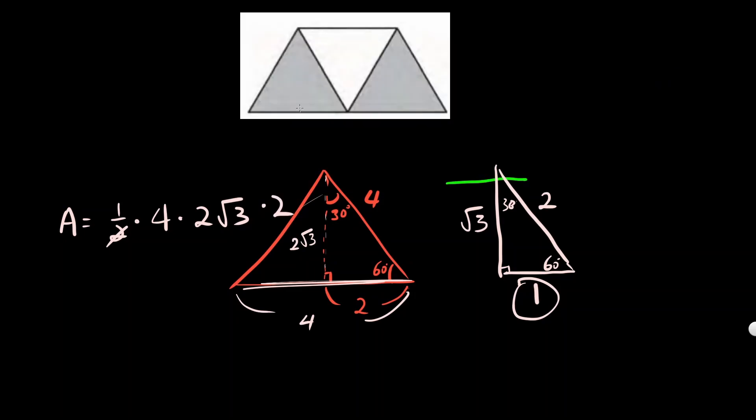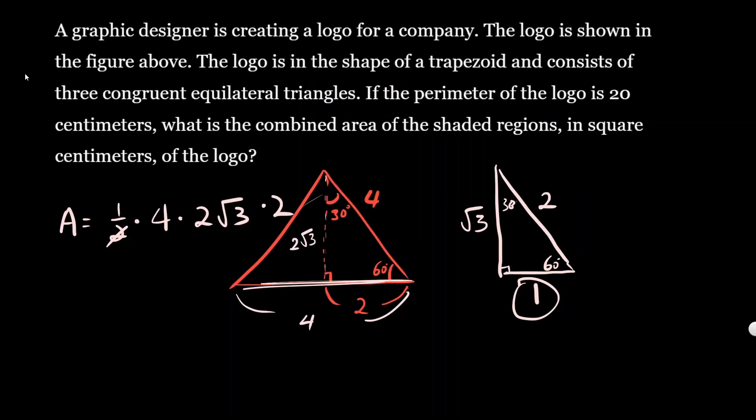So I'm going to multiply by two at the end. We have one-half times four times two square root of three times two because there are two triangles. Two cancels with two, so the area must be eight square root of three.